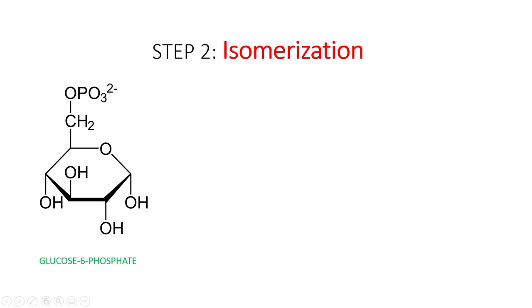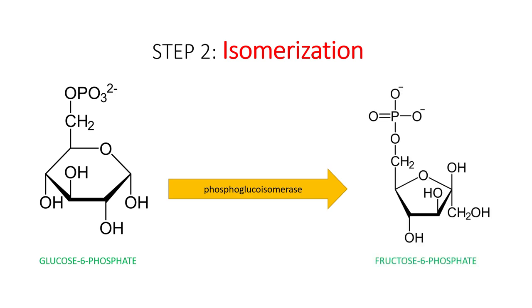The next step is pretty simple. Glucose-6-phosphate becomes fructose-6-phosphate, and this process is catalyzed by phosphoglucoisomerase.